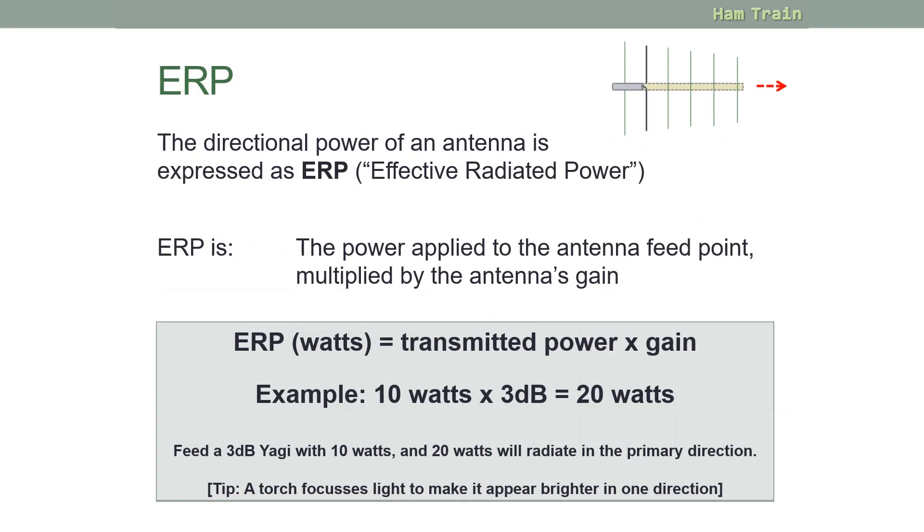So let's look at this in practice, ERP. This stands for Effective Radiated Power. The directional power of an antenna is expressed as ERP, Effective Radiated Power. And it is the power applied to the antenna feed point, which is here, where the coax connects to the antenna, so the power at this point multiplied by the antenna's gain in dB. We can express this as ERP in watts is the transmitted power multiplied by the gain. So a ten watt feed from a transmitter into an antenna with a three dB gain effectively would give you 20 watts transmitted in the direction of travel. So to expand, if we feed a three dB Yagi with 10 watts, then 20 watts will be radiated in the primary direction.